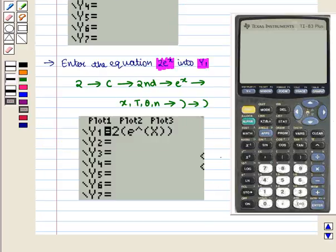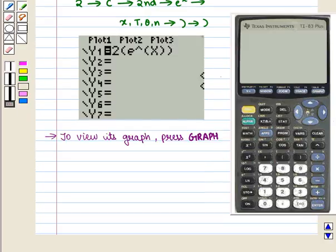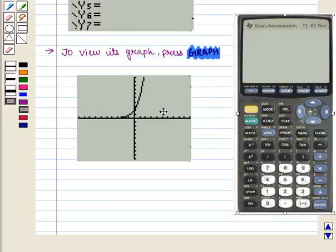So we get the following display on the screen. To view its graph, we press the GRAPH key. On the screen, the graph of the exponential function y equals 2e^x will appear on the coordinate axis.